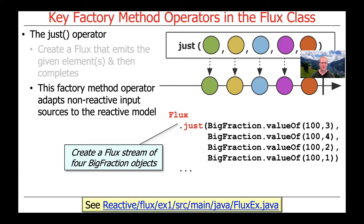Here's a very simple example where we're going to use Flux.just to pass in a bunch of BigFractions. We pass in four BigFractions — we could pass in one, we could pass in eight, it doesn't really matter. We're creating a Flux stream from these four BigFraction objects.